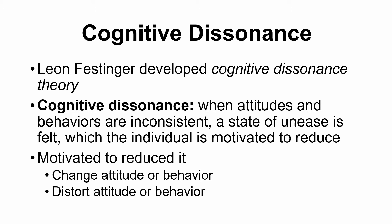Our next concept is the theory of cognitive dissonance, developed by Leon Festinger. Cognitive dissonance is when attitudes and behaviors end up being inconsistent — maybe you have an attitude where you think you like something, but then you behave in a way that suggests you don't. When your behavior and your attitudes are inconsistent, it creates cognitive dissonance, a state of unease that you start feeling.